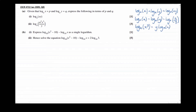Now having a look at the questions. Given that log to the base a of x equals p, and log to the base a of y equals q, express the following in terms of p and q. Part one: log to the base a of xy. Notice we can use the addition rule in reverse — we've got a product, so we can separate them out into additions. That becomes log to the base a of x plus log to the base a of y, which equals p plus q.